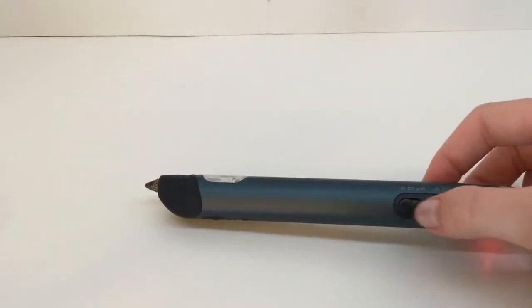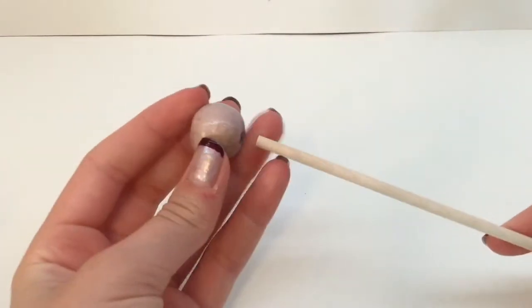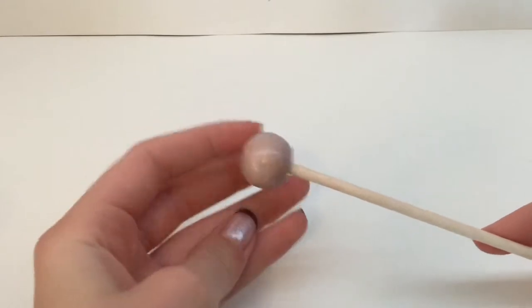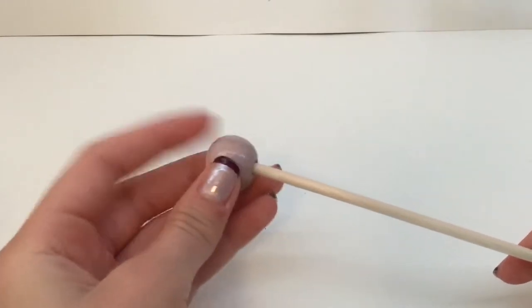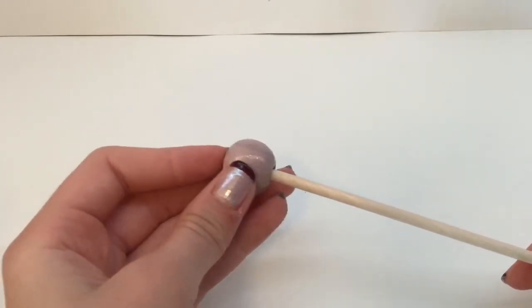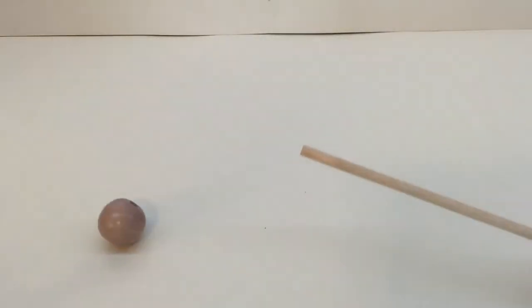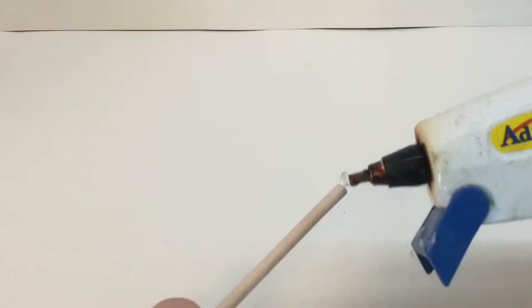First you want to plug in your pen. I'm using ABS so my mode is on high. This wooden dowel is really helpful for holding the beads on the end so you don't have to hold the bead in your hand and draw with the 3D pen.